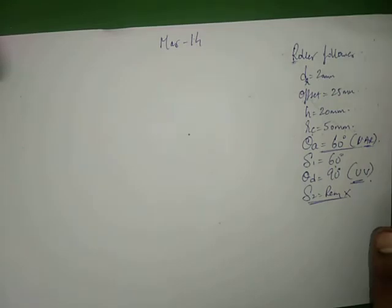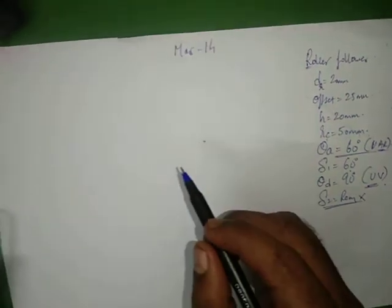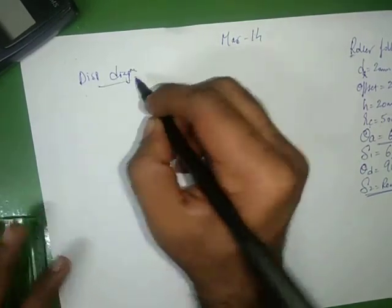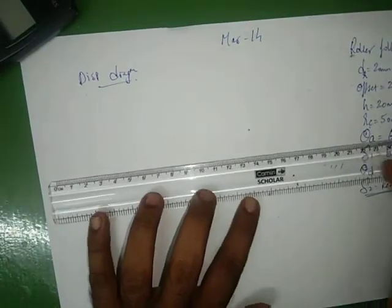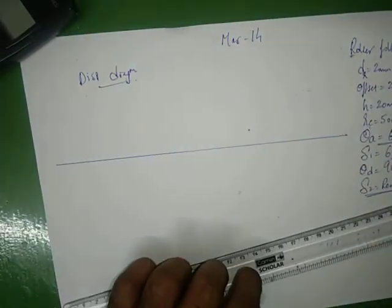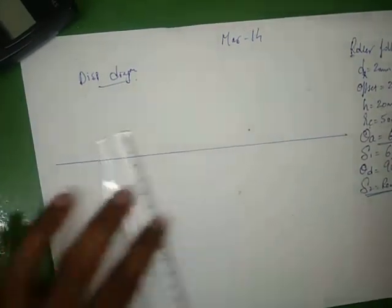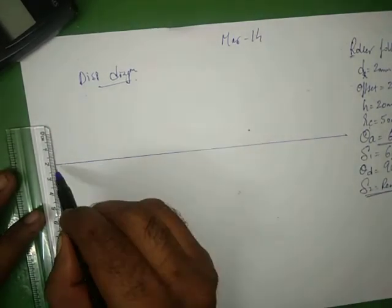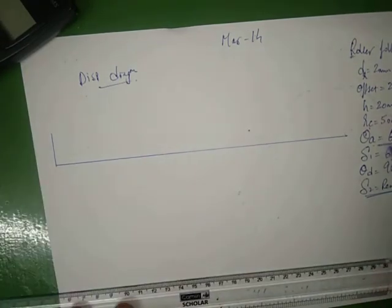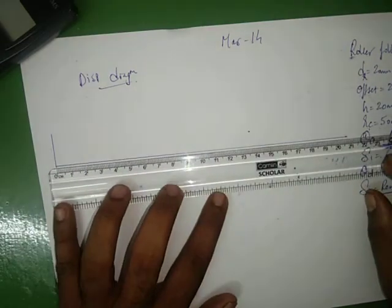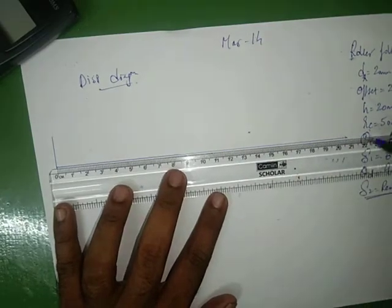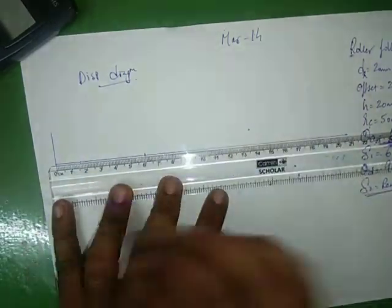This is the displacement diagram — we have to draw the displacement diagram. We mark theta A equal to 60 degrees. We need to mark the 60 degrees carefully, as this is what you have to do in the exam.